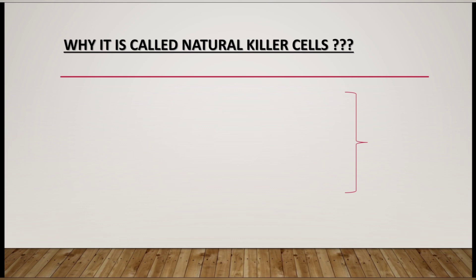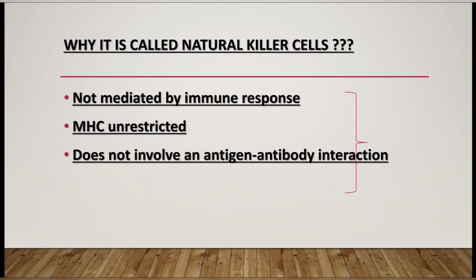Why did scientists give the name 'natural killer cell'? Natural killer cells have a very unique mechanism of action: they do not need any antigen exposure, their action is not mediated by the immune response, and it is totally MHC unrestricted. Other T lymphocytes need MHC help to execute their action, but NK cells are MHC unrestricted and do not involve antigen-antibody interaction. Because of this unique mechanism, they are a very powerful cell of innate immunity — hence the name natural killer cell.